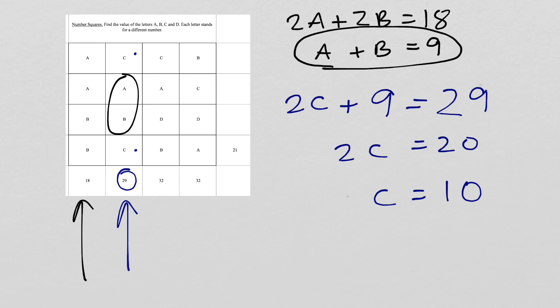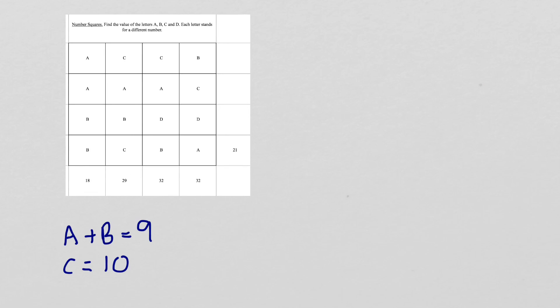Take away 9 from both sides. I get 2c equals 20 and then c equals 10. So we found the first letter and that opens up the answers for everything else. The next column or row I'm going to look at will involve the clues that I've worked out so far. And this is going to be this row here. So I know that a and b are 9. I know that c is 10. So I'm just going to write b plus 19 equals 21. Which means that b has to equal 2.